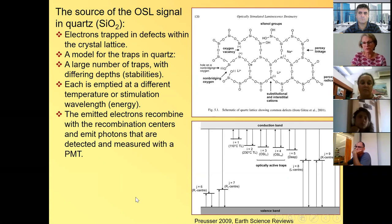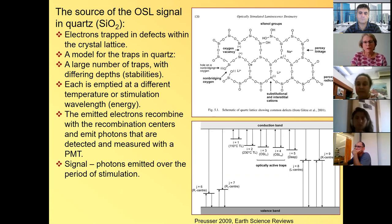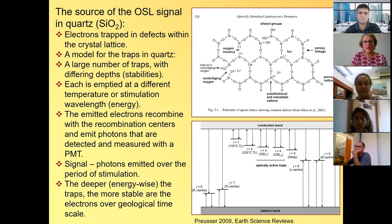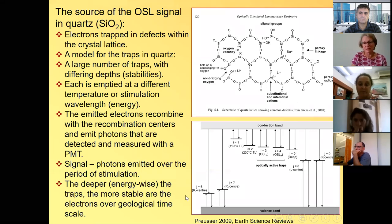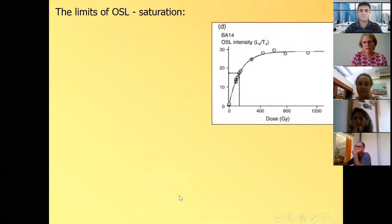So if we heat the sample, first the 110 peak will be emptied, and then the 230, and then the OSL traps and so on. And these will be emptied only at very high temperatures. But we can also empty the traps with light, and different wavelengths will empty different traps. So the electrons that are emitted from the optically active traps are combined with a combination center and emit a photon. And these photons are detected by the photomultiplier, and this is the signal that we measure. And the deeper the traps, the more stable they are over geological timescale.